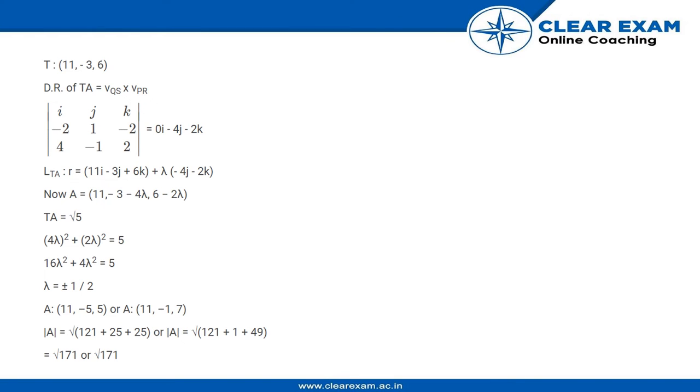Once we get that, we can find the point T, which is 11, minus 3 and 6. And we need to find the direction ratios of T, which means the normal that is from the point T because T is perpendicular to both PR and QS. So we can directly write the cross product of these two direction ratios to get the direction ratios of T.